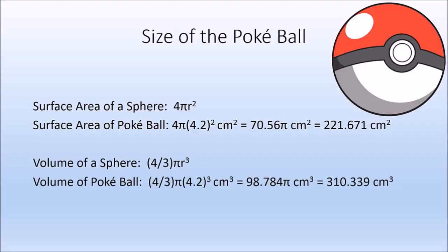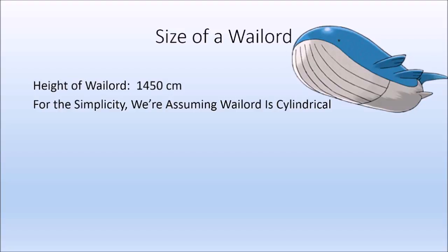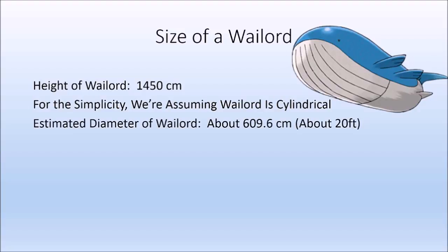Now let's look at a Pokémon we have to fit inside this 310 cubic centimeter Pokéball. Let's take everyone's favorite 398-kilogram float whale — Wailord. Everyone knows Wailord's density is actually less than air, which is why it can float and bounce. We'll take its height of approximately 1450 centimeters. For simplicity, I'm going to assume Wailord is cylindrical — obviously not perfectly cylindrical, but close enough to approximate its size. Wailord's diameter isn't given by the Pokédex, but a rough approximation is about 20 feet, which is about 609.6 centimeters.